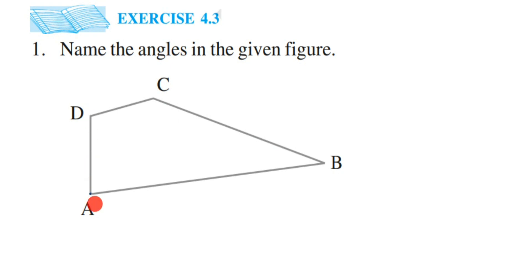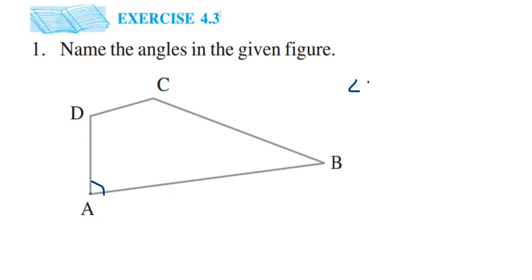The two arms at vertex A are AD and AB. So I'm going to write it as angle DAB, where A is at the center. You can also write it as BAD — both ways are correct. So this will be angle DAB.